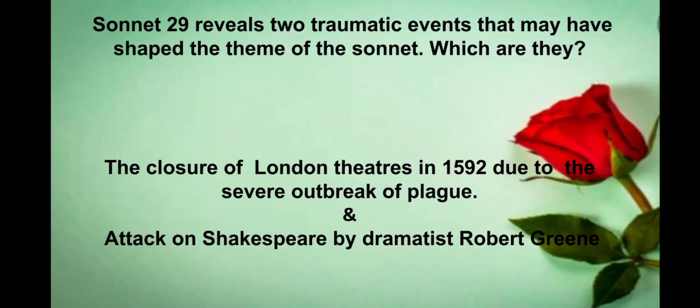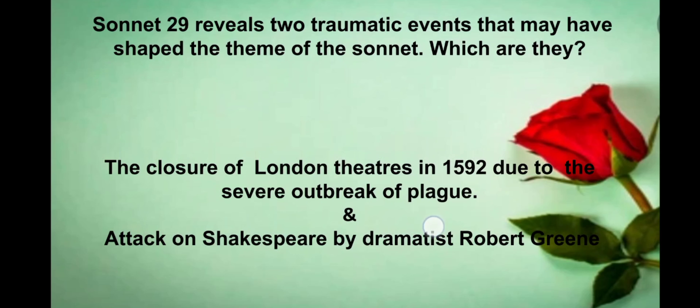Next: Sonnet 29 reveals two traumatic events that may have shaped its theme. Which are they? Answer: first, the closure of London theatres in 1592 due to the severe outbreak of plague; second, the attack on Shakespeare by dramatist Robert Greene. The name of Greene's work is 'A Groatsworth of Wit,' in which he remarked about Shakespeare as a warning for three of his fellow university wits.